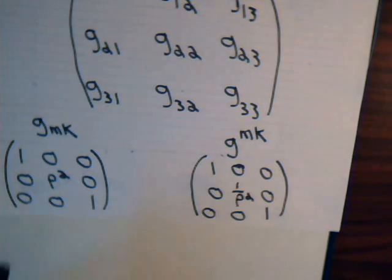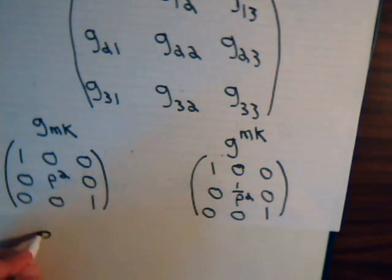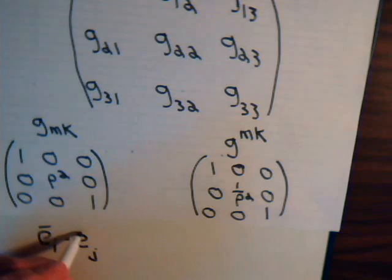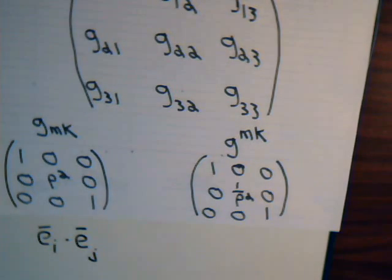And I believe it was in video number 13, where we had determined the metric tensor for cylindrical coordinates. And this was the matrix that we obtained. Now, remember, for the metric tensor, or at least the covariant metric tensor, that's obtained by taking the dot product of the tangential vectors to each of the coordinate axes.